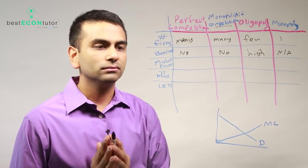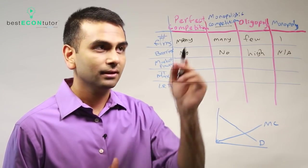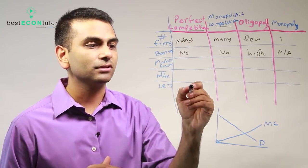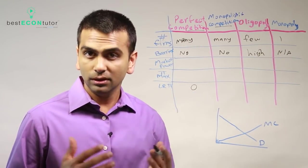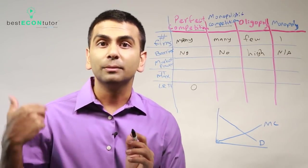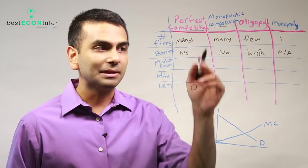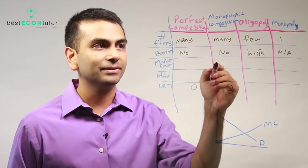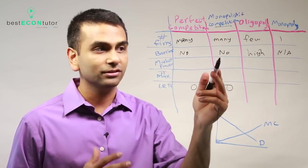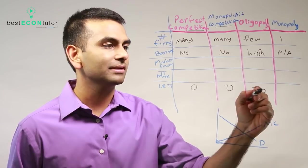This also tells us about long-run profit. Because there are many firms and no barriers to entry in perfect competition, long-run profits are zero — if you're making a profit, other firms will enter and compete until profits go to zero. The same is true for monopolistic competition. For oligopolies and monopolies, however, long-run profits can be positive — greater than or equal to zero.